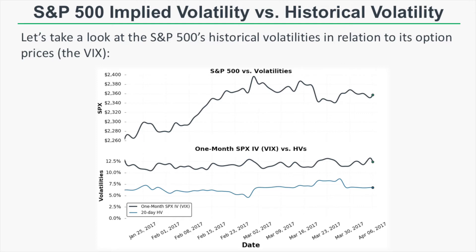For the rest of this presentation, we'll look at entries based on implied volatility and its relationship with historical volatility. Most of the time, implied volatility trades at a premium to historical volatility — as we see in this example — but sometimes historical volatility will actually be above implied volatility, in which case we may not want to sell options. That's what we're going to find out.